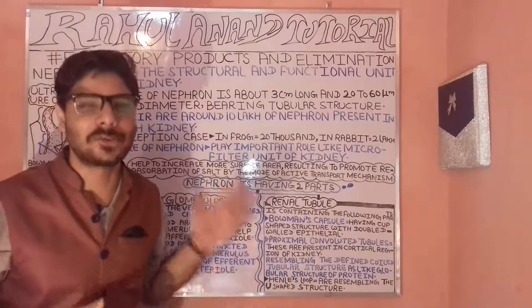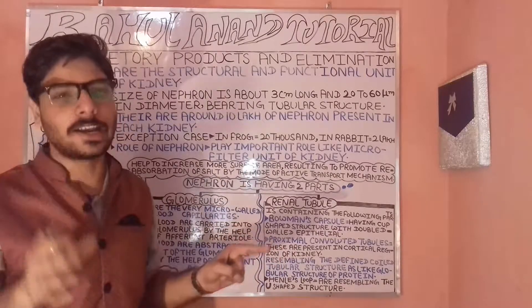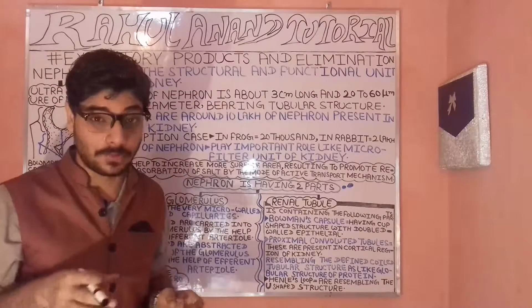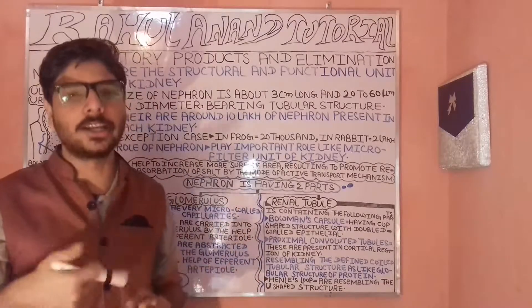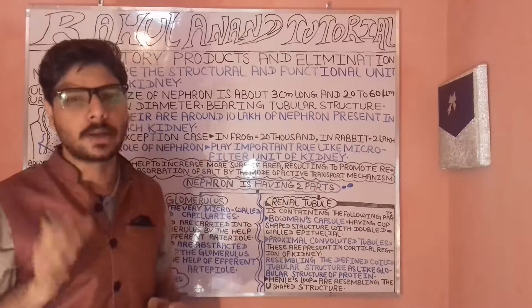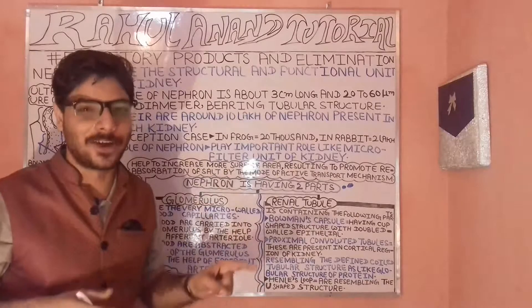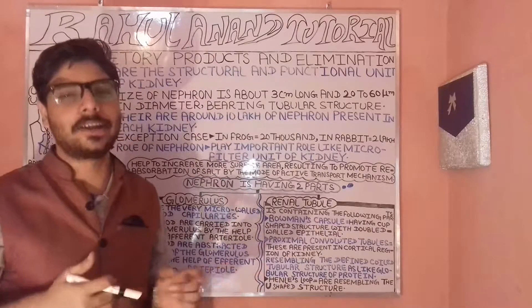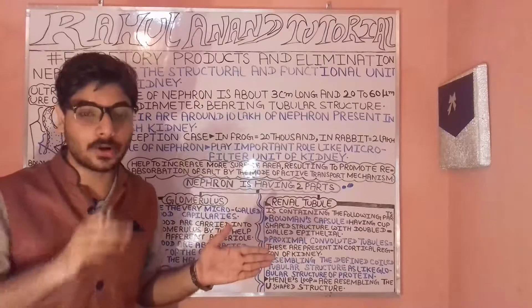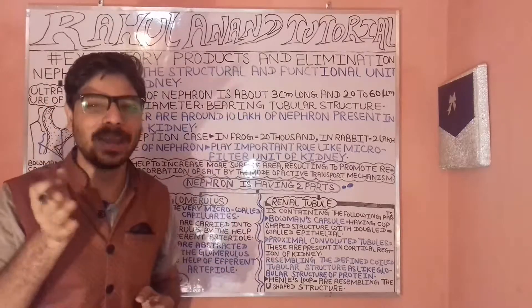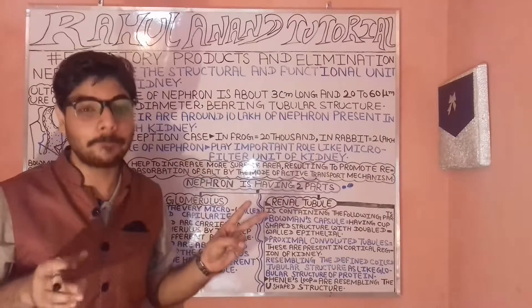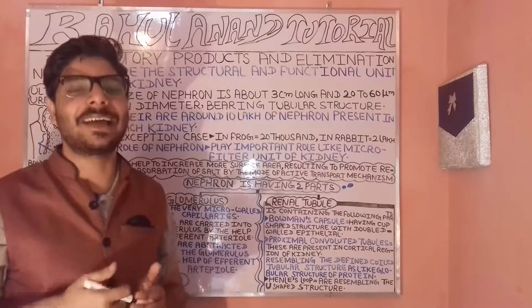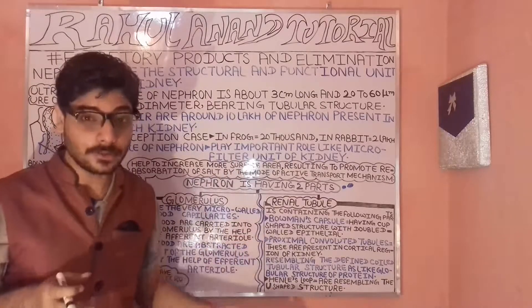Capillaries function similarly to arteries and veins. Arteries carry oxygenated blood (O2, which is diatomic) to various parts of the body via the thoracic and abdominal cavities. Veins carry deoxygenated blood (CO2). The roles of arteries and veins in the heart's circulatory mechanism will be covered in the next lecture.